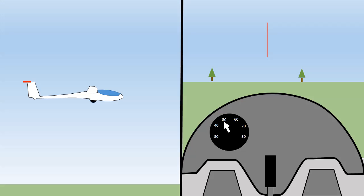Now let's look at the controls. On the right hand side I'm showing a simplified view of the cockpit. There's the control stick here which is between your legs and you operate with your right hand, and there's the rudder pedals which are on your left and right feet. We also have two of the basic instruments: the airspeed indicator which shows how fast we're going, and the yaw string, which we'll come back to later.